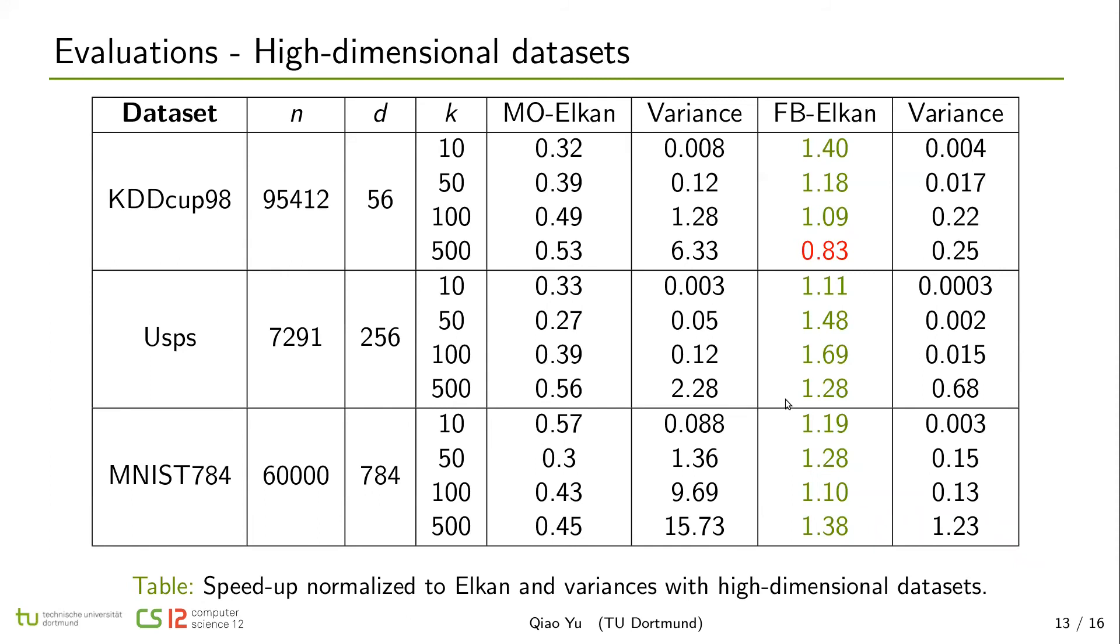Here are our experiment results. Values in MO-Elkan and FB-Elkan columns means the speedup normalized to Elkan k-means. So if value is larger than 1, it means that it's faster than Elkan. In high dimension datasets, most of the cases, FB-Elkan is faster than Elkan k-means because the cost of distance calculations in higher dimension datasets is very high, and FB-Elkan can reduce most than others.